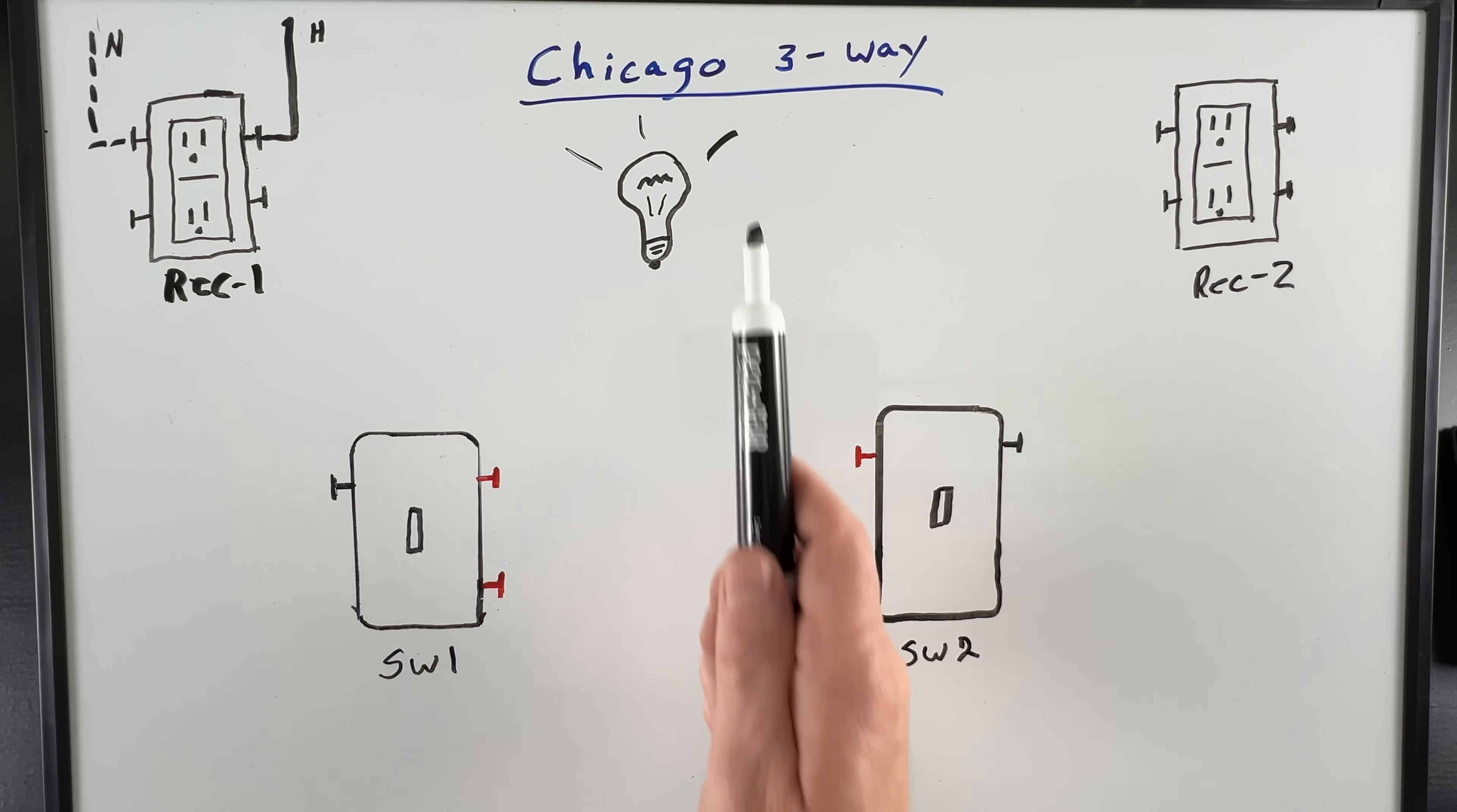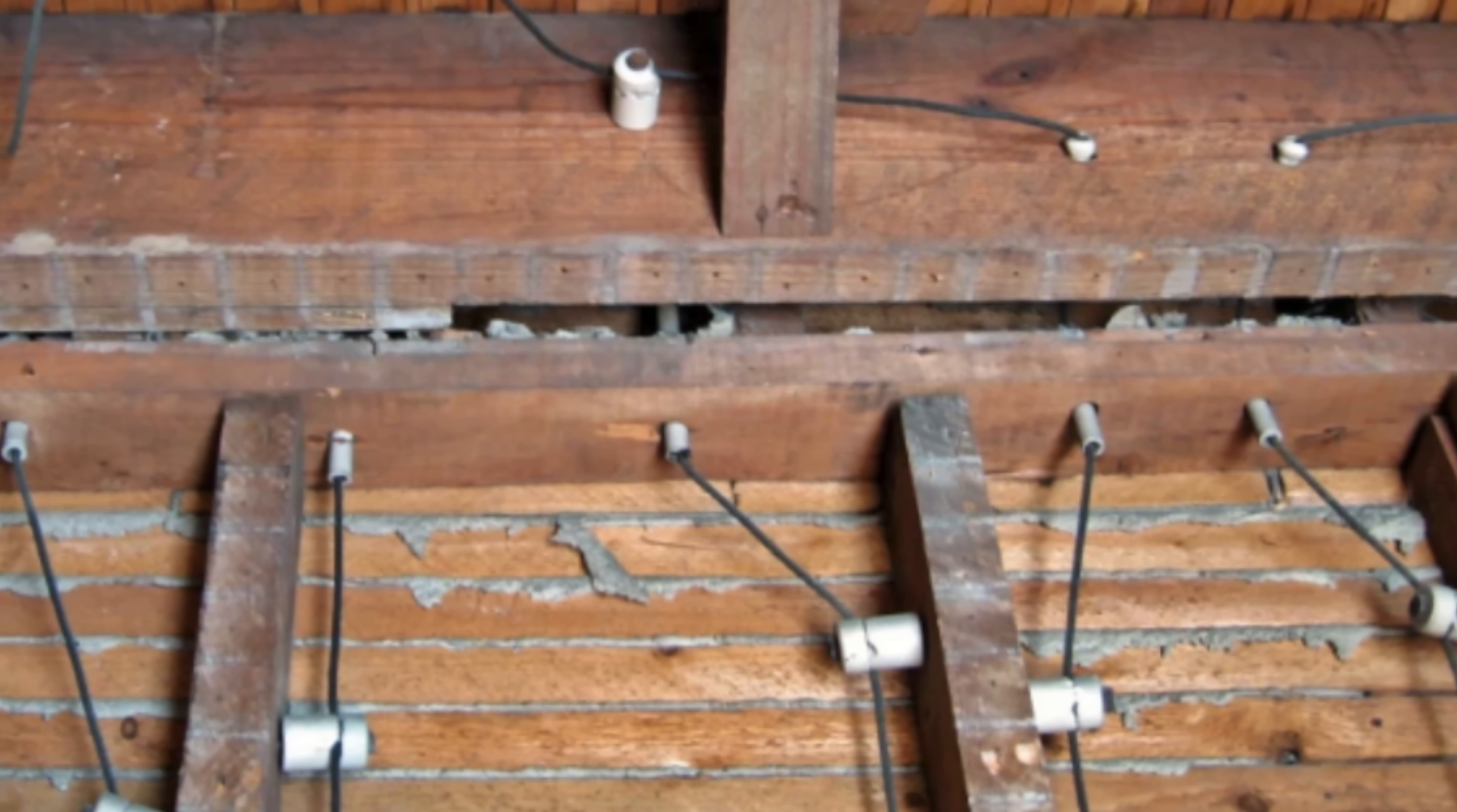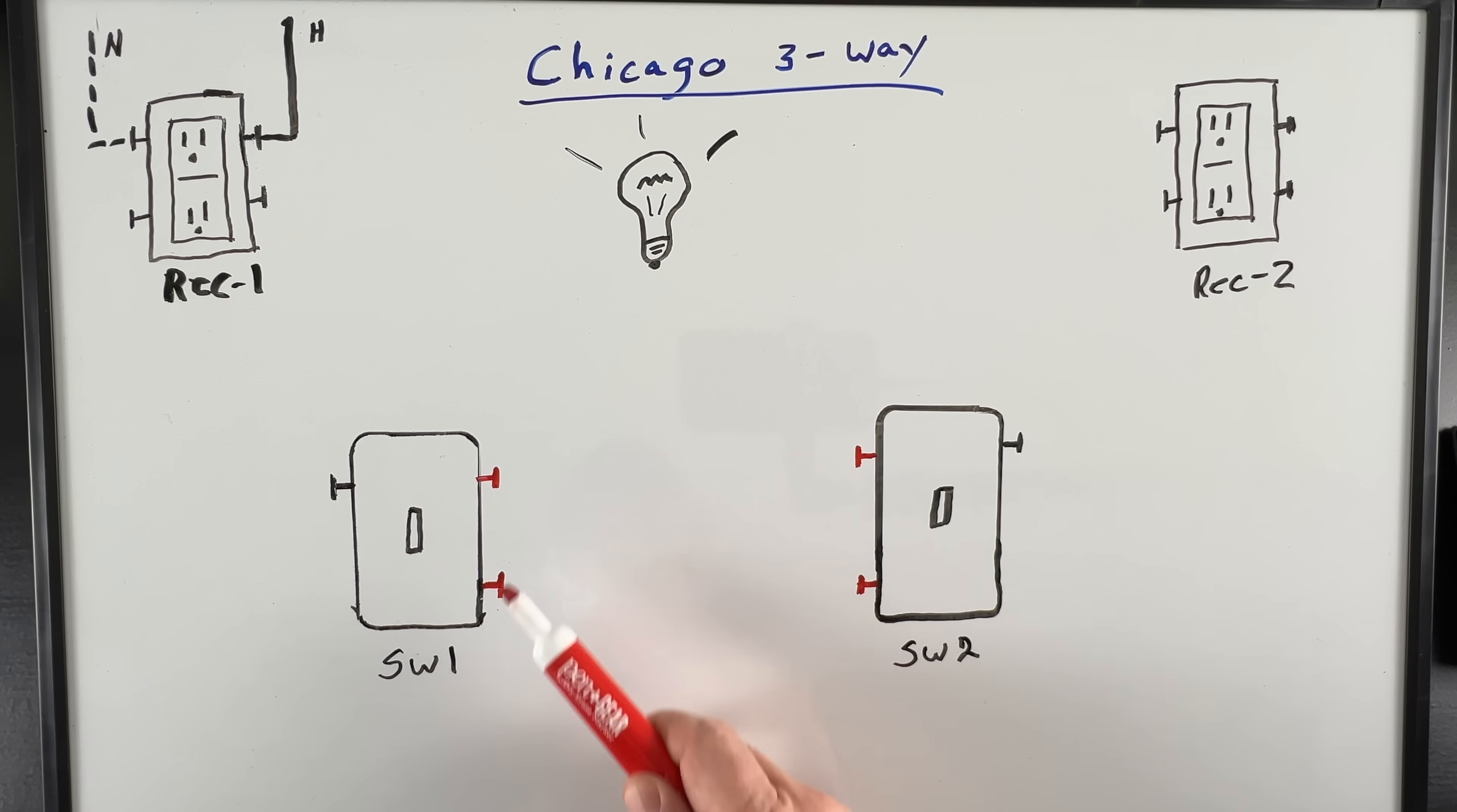The Chicago three-way method was very common with knob and tube wiring, which had just two wires, hot and neutral, but no ground. Three-way switches have two gold screws for our travelers and one black screw for our common. But remember, these aren't standard three-ways, so we're going to wire these differently.